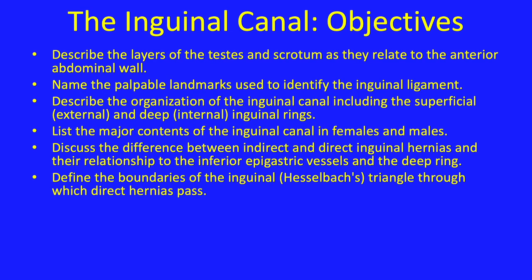The objectives of this lecture are listed here. At the completion of this lecture, you should be able to: describe the layers of the testis and scrotum as they relate to the anterior abdominal wall; name the palpable landmarks used to identify the inguinal ligament; describe the organization of the inguinal canal, including the superficial external and deep internal inguinal rings; list the major contents of the inguinal canal in females and males; discuss the difference between indirect and direct inguinal hernias and their relationship to the inferior epigastric vessels and the deep ring; and finally, define the boundaries of Hesselbach's triangle through which direct hernias pass.